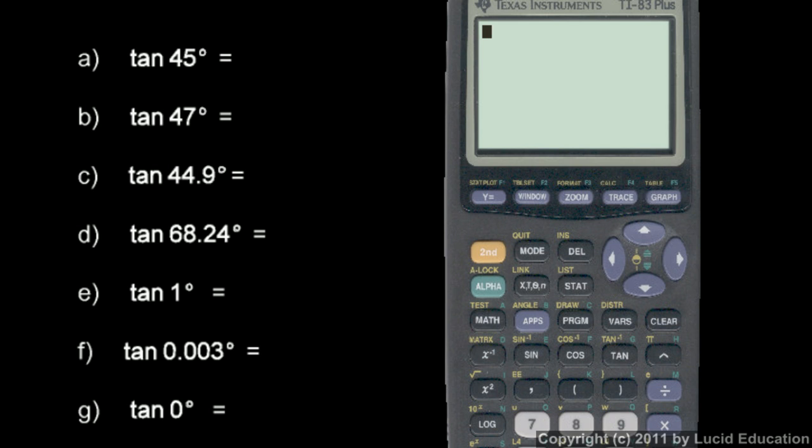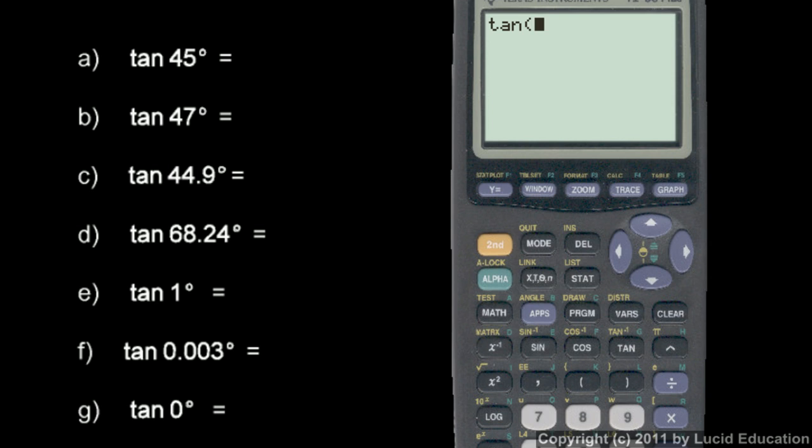So the tangent of 45 degrees. We just hit the tangent key, type in tangent 45. And you don't have to hit the close parentheses here, although I like to. Tangent 45, and of course it says 1. So the tangent of 45 is 1.